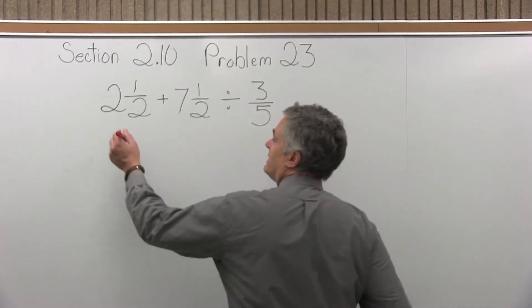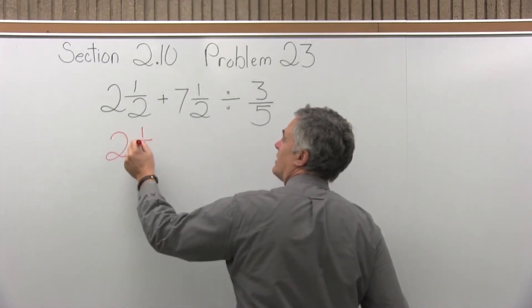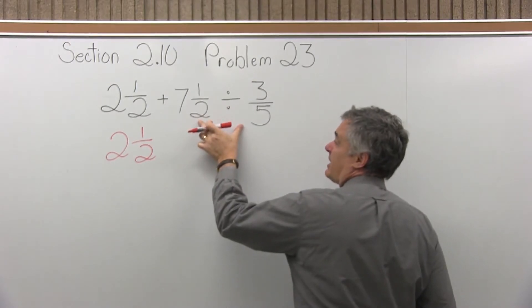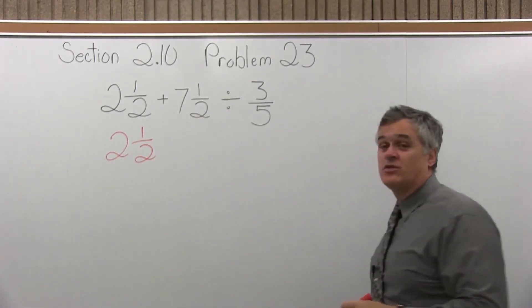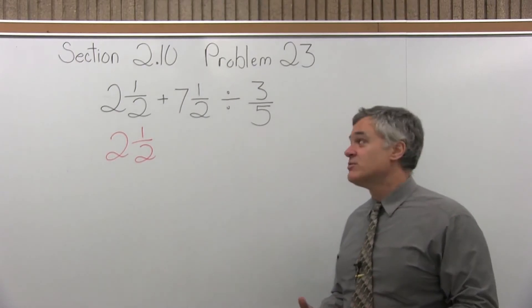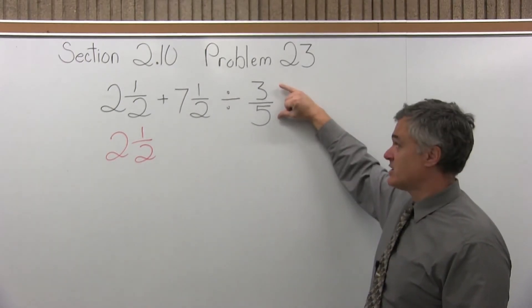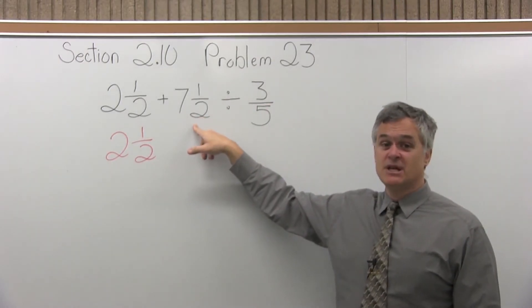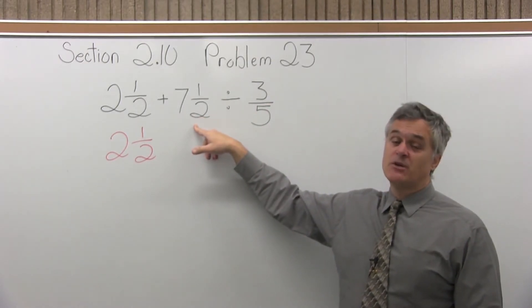So let me leave the two and a half for just a minute. It will stay out in front. And for the next step I want to do seven and a half divided by three fifths. So if you remember when you divide fractions, I'm going to flip or invert the second fraction.